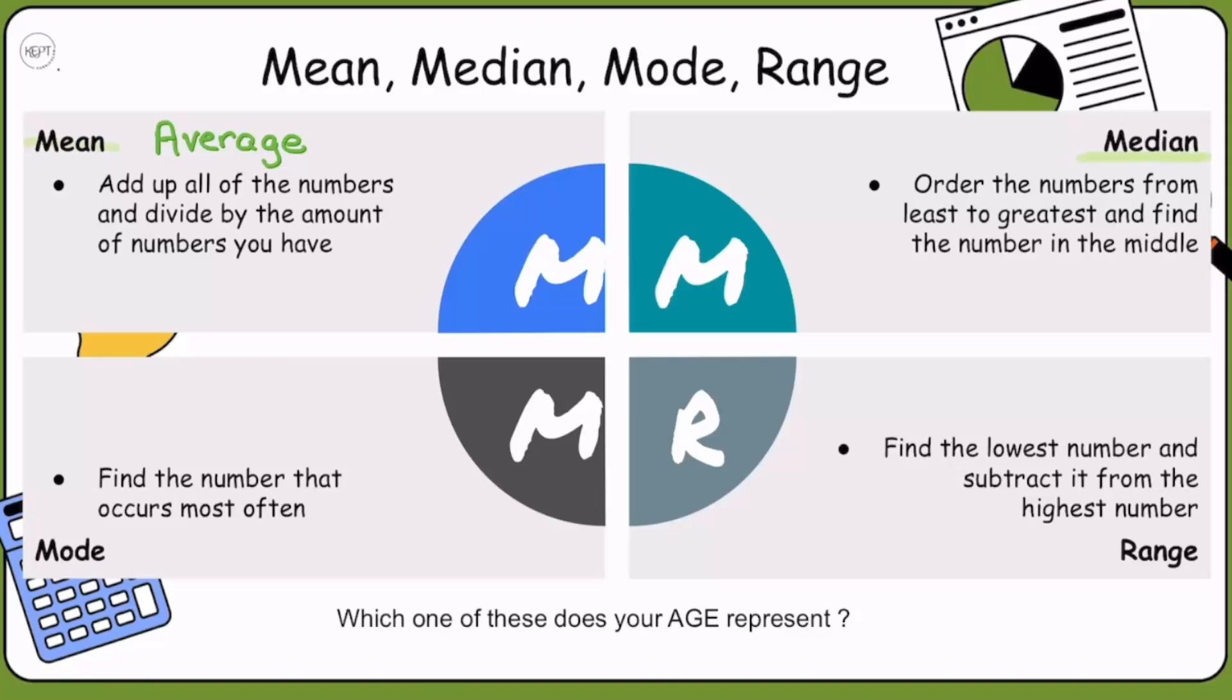Next, we have the median. Order the numbers from least to greatest and find the middle number. The median can be an average if I have two middle numbers. Next, I have the mode. The mode is the number or numbers that occur most often. The range is where we take the lowest number and subtract it from the highest number.